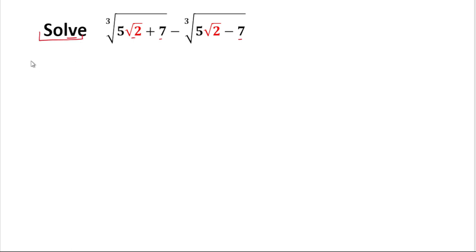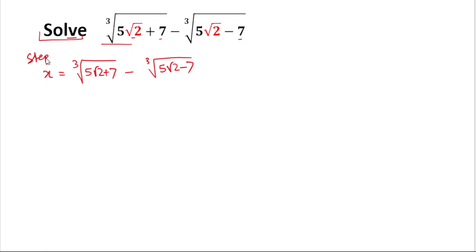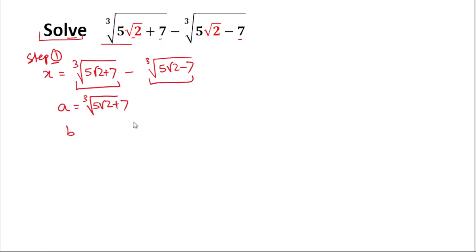For solving this problem, we'll first let this expression as x. So we can write x is equal to cube root of (5√2 + 7) minus cube root of (5√2 - 7). We'll assume the first term as a, so a = ∛(5√2 + 7), and we'll let the second term as b, so b = ∛(5√2 - 7).